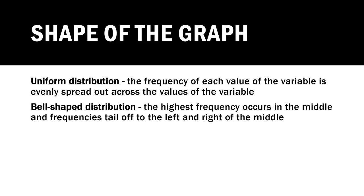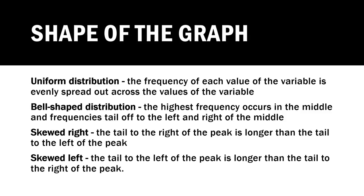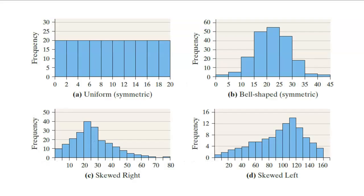This is when the frequency of each value of the variable is evenly spread out across the values of the variable. I'll show you a picture of this in a minute, but right now we're just going to go through the definitions. We can also have a bell-shaped distribution. This is where the highest frequency occurs in the middle and the frequencies fall off to the left and right of the middle. So it's kind of symmetric, kind of even on both sides. Then you can have what's called skewed right. This is where the tail is to the right of the peak and is longer than the tail to the left of the peak. And skewed left is the exact opposite, where the tail to the left of the peak is longer than the tail to the right of the peak. So verbally, that's what those mean.